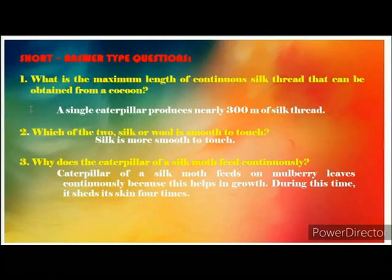Short answer question 10: What is the maximum length of continuous silk thread that can be obtained from a cocoon? Answer: A single caterpillar produces nearly 300 metres of silk thread.